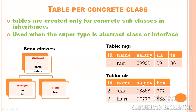For example, columns for super type properties like ID, name, salary, and columns for subclass-specific properties will be created together in each subclass table. The tables created for subclasses will be completely independent — Manager and Clerk will have no relation between them. Independent tables will be created. So this is the Table Per Concrete Class strategy, and now we will discuss it programmatically.